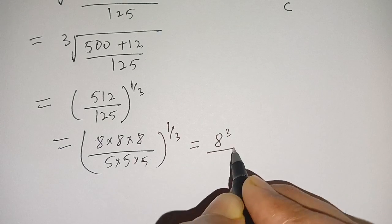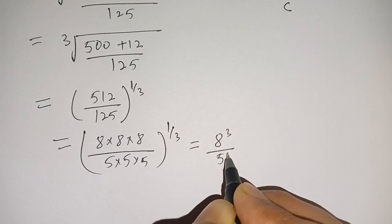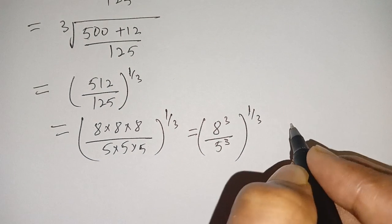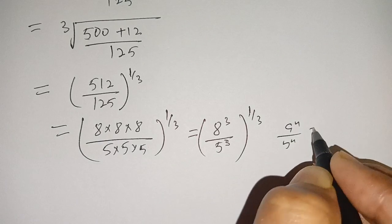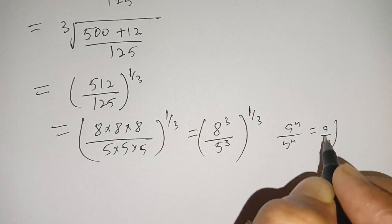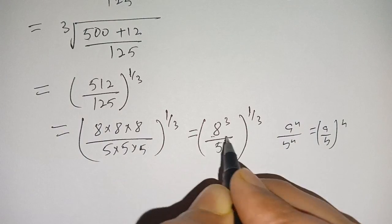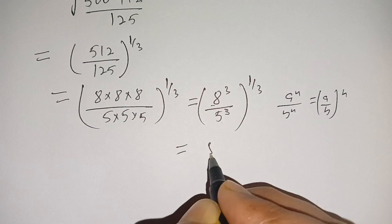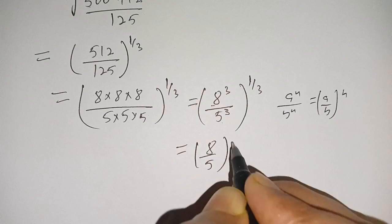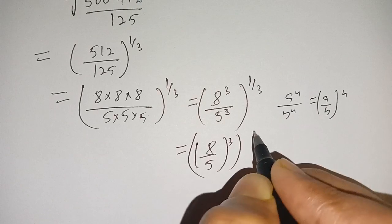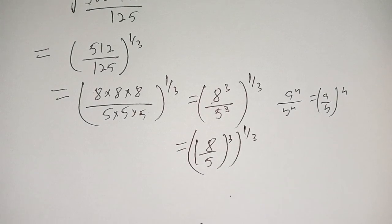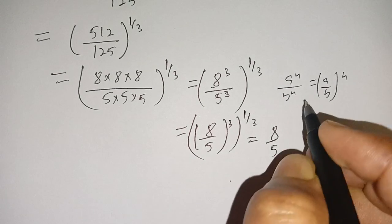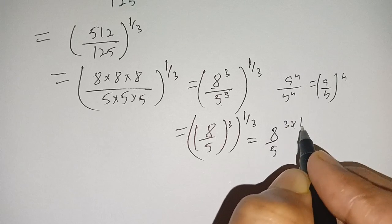This can be written as 8 cubed divided by 5 cubed, whole to the power 1 divided by 3. We know that a to the power n divided by b to the power n equals (a divided by b) to the power n. Here a is 8 and b is 5. Applying this formula we get (8 divided by 5) to the power 3, whole to the power 1 divided by 3.